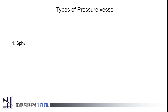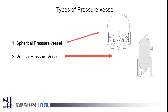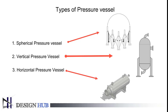Let us see the types of pressure vessels. Types of pressure vessel are: Spherical pressure vessel, Vertical pressure vessel, and Horizontal pressure vessel. Each type serves a specific purpose.